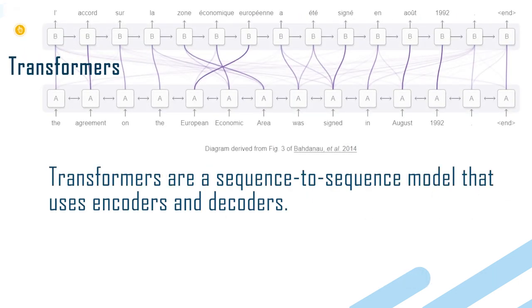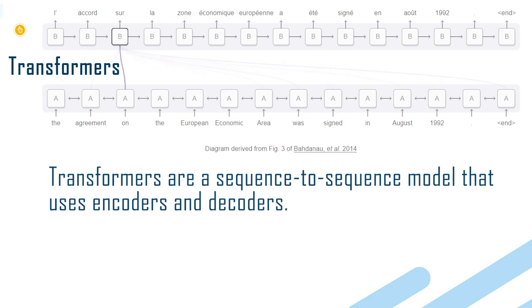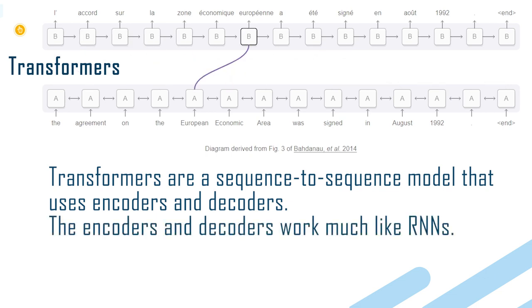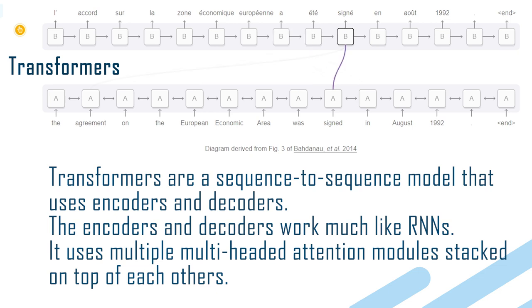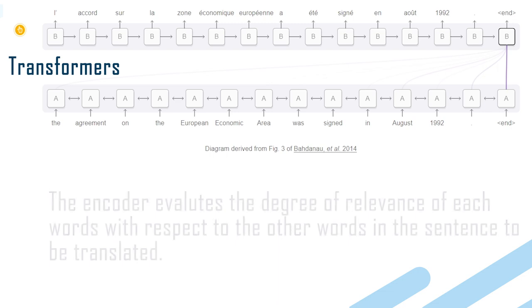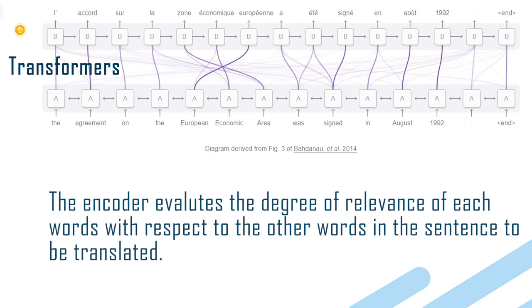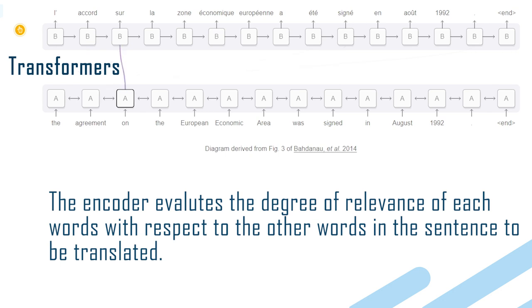Transformers are a sequence-to-sequence model that uses encoders and decoders, and they work much like RNNs. It uses multiple multi-headed attention modules stacked on top of each other. The encoder evaluates the degree of relevance of each word with respect to the other words in the sentence to be translated.